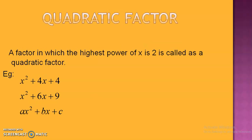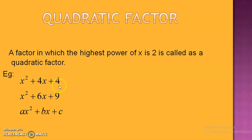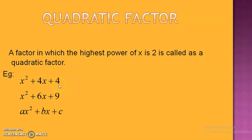Now, quadratic factor. A factor in which the highest power of x is 2 is called a quadratic factor. Look at the first example: x squared plus 4x plus 4. There are two terms of x. The power of x in 4x is 1, whereas the power of x in x squared is 2. So the highest is 2. Hence, it is called a quadratic factor.